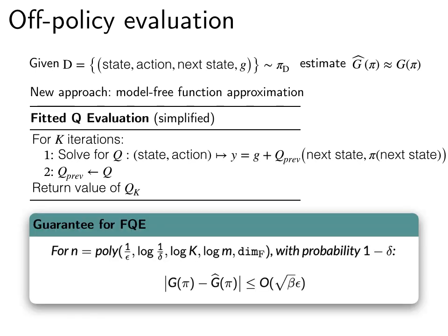We can show an error bound for this off-policy evaluation procedure. This is a somewhat simplified statement to keep the notations light. But what it says is that after K iterations of this procedure, for any ε and δ, if the number of samples n is polynomial in 1 over ε and the pseudo-dimension of the function class F, then the difference between the estimated value function and the true value function is bounded by this quantity on the right.